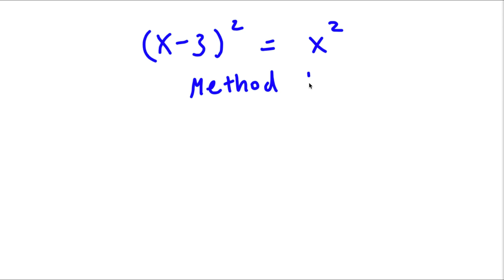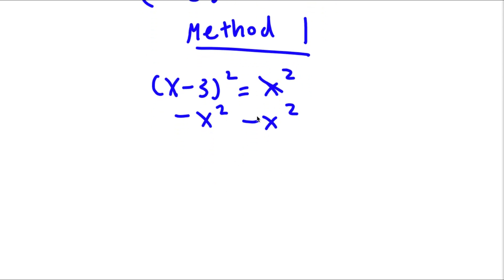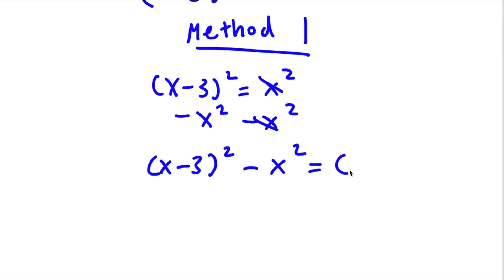For method one, x minus 3 squared is equal to x squared. I'm going to first start by subtracting x squared on both sides. These two cancel out, and I will have x minus 3 squared minus x squared is equal to zero.